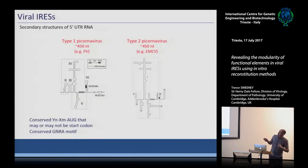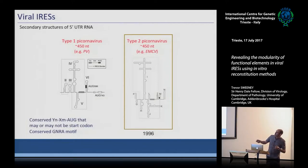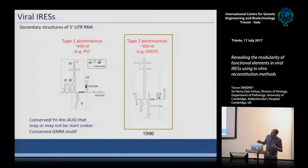We'll focus first on the type 2 picornavirus IRES, the first to be really well studied using this in vitro reconstitution system. Overall, there is no sequence or structural similarity between the type 1 and type 2 classes of IRES. The only conserved feature between them is a polypyrimidine tract just downstream of an AUG.